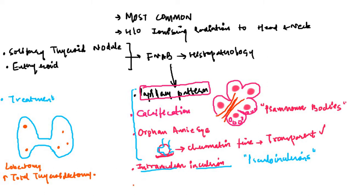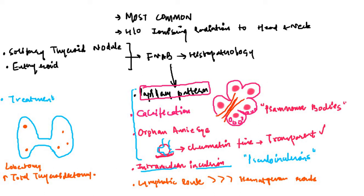An important point about papillary carcinoma is that it spreads via the lymphatic route. There are two modes of spread — lymphatic and hematogenous — but papillary carcinoma spreads mainly via the lymphatic route. Very rarely it can spread through the hematogenous route, that is through blood vessels. The most common site of metastasis is the lungs.